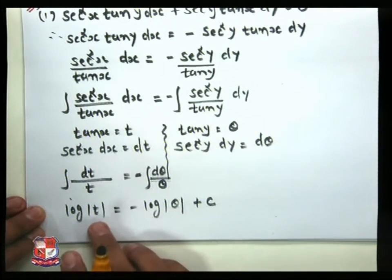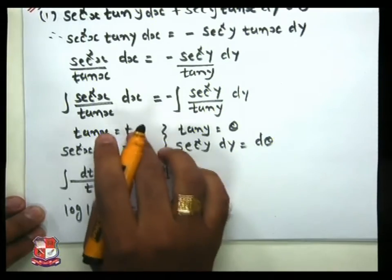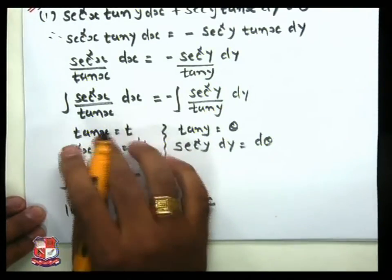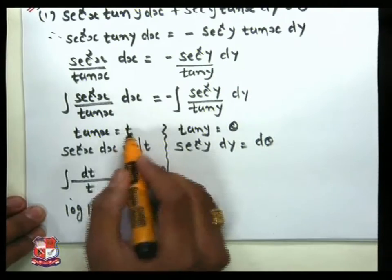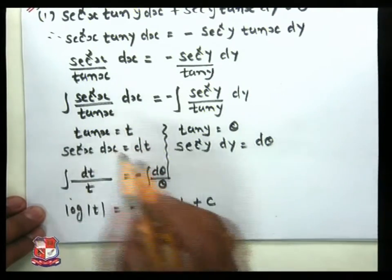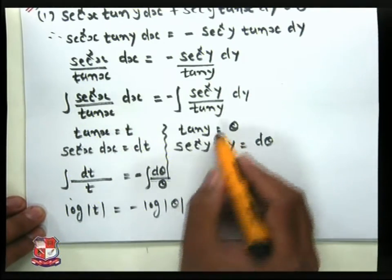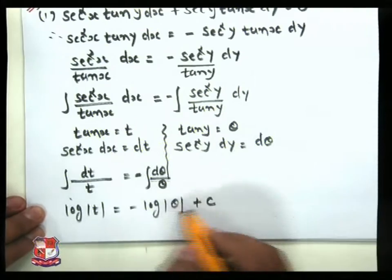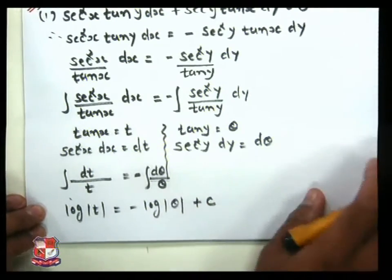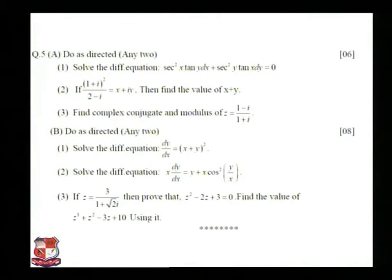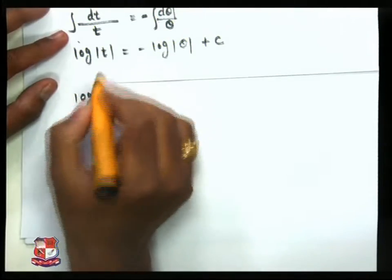So 1/t integrated is log|t|, equal to minus sign, and 1/θ integrated is log|θ|, plus the constant c.